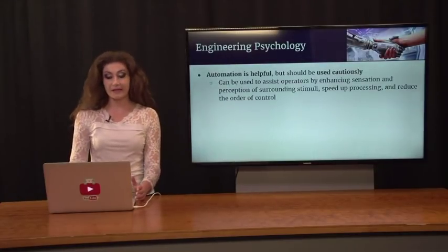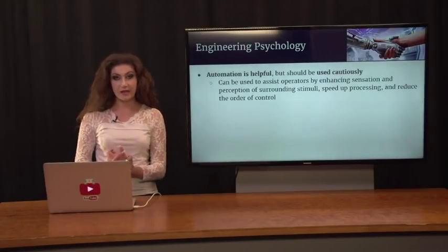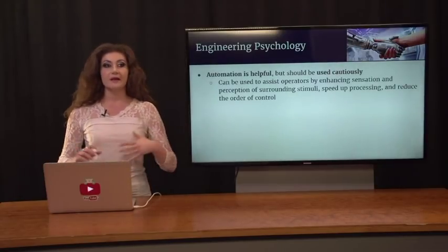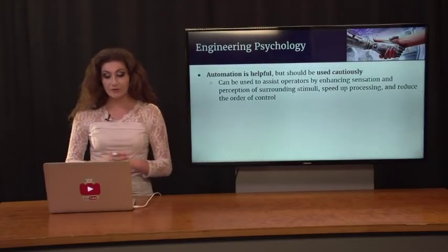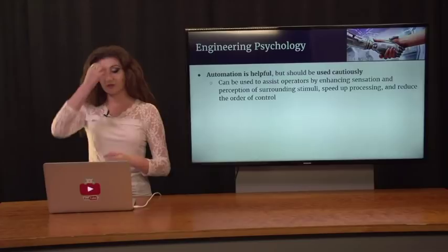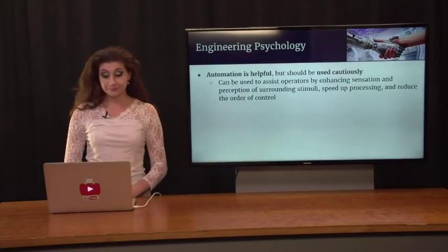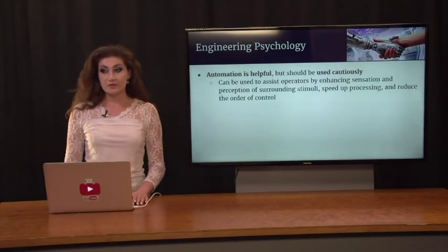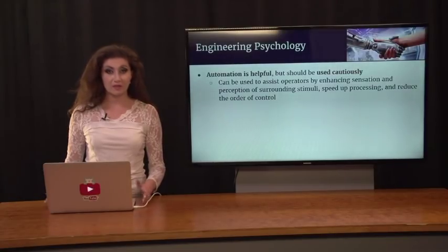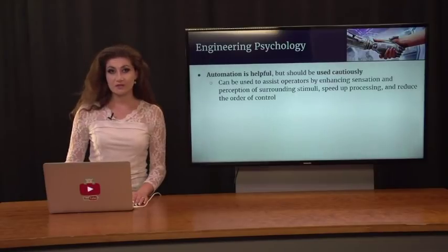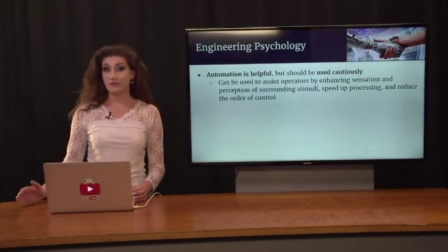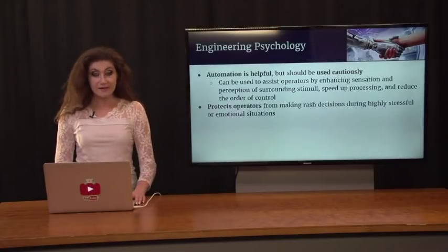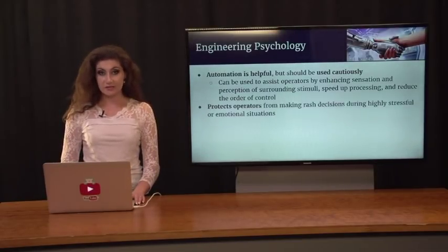Automation is helpful but should be used cautiously. It can assist operators by enhancing sensation and perception of surrounding stimuli — useful for detecting enemy aircraft or obstacles when your attention is directed elsewhere. A radar can detect things for you. Automation also speeds up processing and reduces order of control, helping when cognitive resources are limited. It protects operators from making rash decisions during highly stressful or emotional situations, since we tend to lack rational thinking when panicking or in an extremely aroused state.